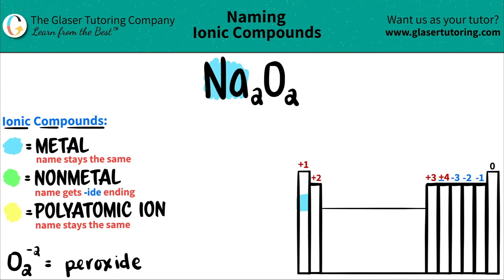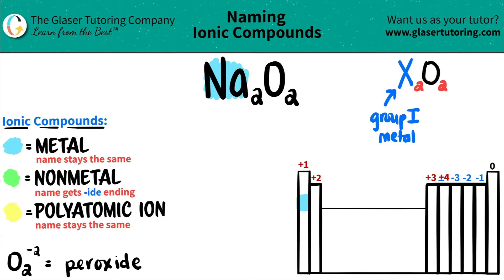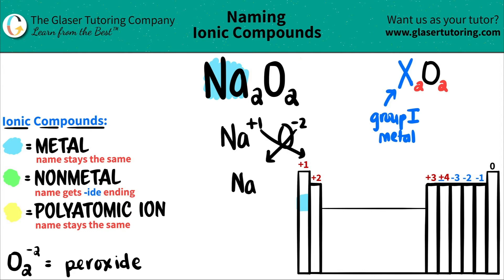Here's the trick. If you have a group one metal with oxygen, and you have twos and twos on the bottom, this oxygen is not the regular oxide — it's actually a polyatomic. Normally, if you crisscross these, sodium should be a plus one because it's in group one, and oxygen should be a negative two. If you crisscross these, you would get Na₂O as the regular compound, not two and two.